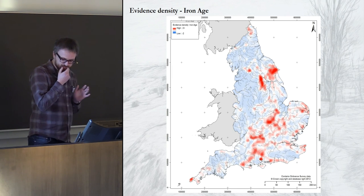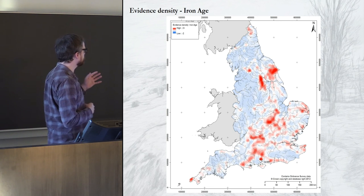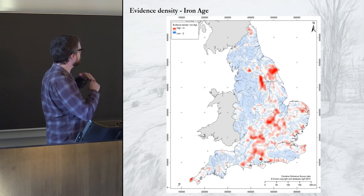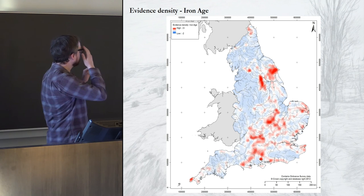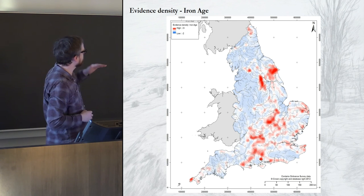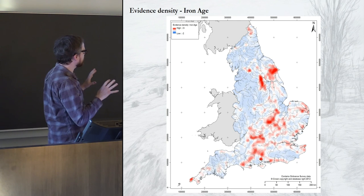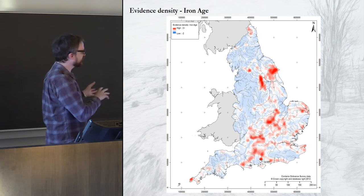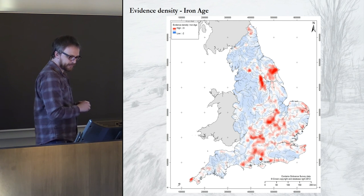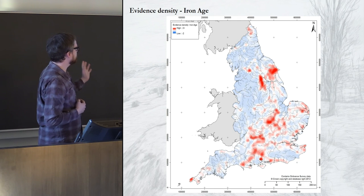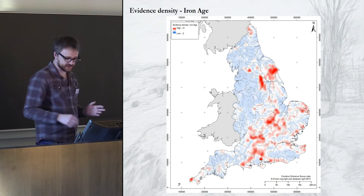This map is the Iron Age result, mapped as Z scores — you subtract the mean and divide by the standard deviation. The red values are above average and the blue values are below average. This makes it easier to get a sense of the relative variation within and between the datasets. The obvious thing we can say for the Iron Age is that the eastern half of the country is showing a lot more activity than the western half.